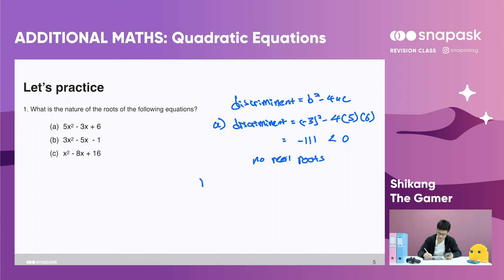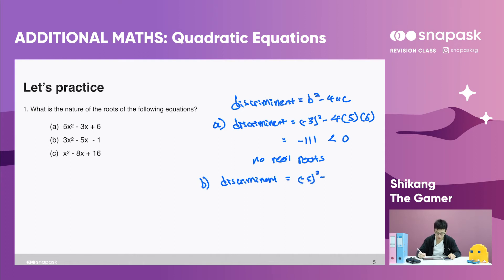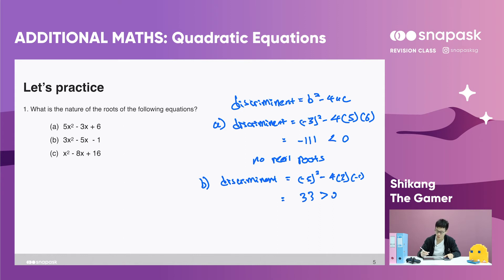For part b, we have 3x squared minus 5x minus 1. Finding the discriminant: negative 5 squared minus 4 times 3 times negative 1. You get 33, which is more than zero, so there will be two real roots.